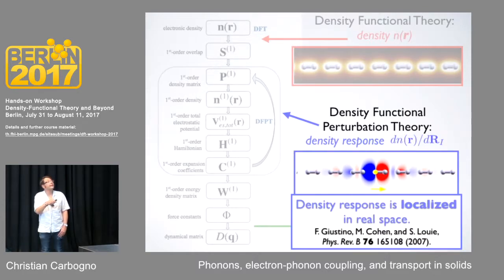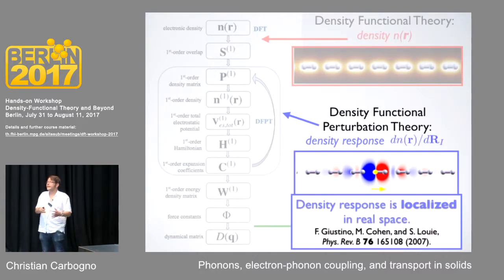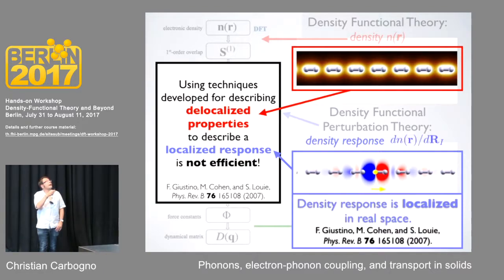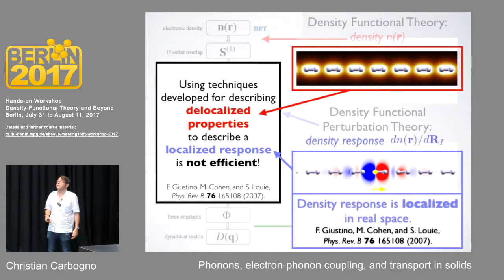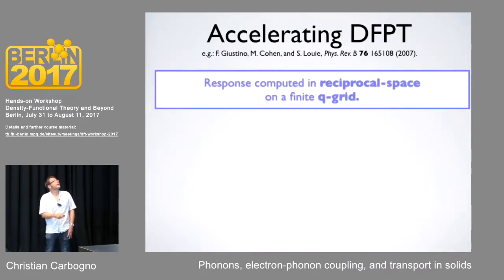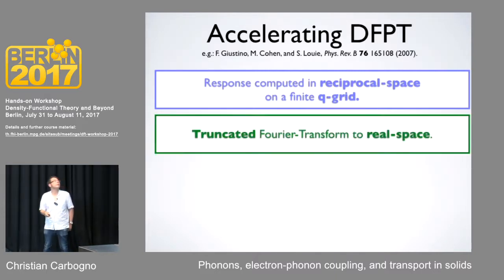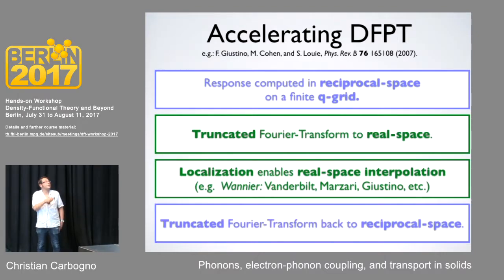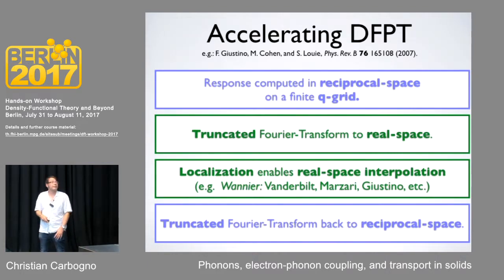The interesting thing is that this response is localized in real space. So it's not too efficient to use techniques designed for non-local periodic stuff to calculate something that is localized. Typically you have to switch from a periodic representation to a localized representation. One approach is to compute your response in reciprocal space first on a rough grid in the Brillouin zone, then transform to real space, localize it there using Wannier functions, and then go back with a Fourier transform to get fine spacing in reciprocal space.